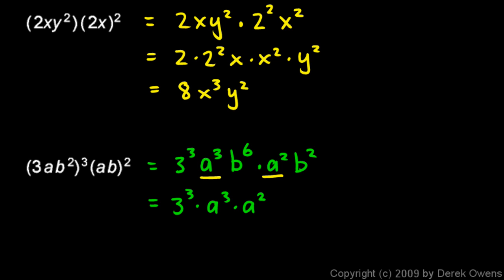This could be written as the 3 cubed times the a cubed times the a squared times b to the sixth times b squared. All I did was take these two pieces and put them next to each other. Now again, this is a step right here that I would encourage you to do in your head. Write it out if it's helpful to you. But you can probably go straight from here to the final answer.